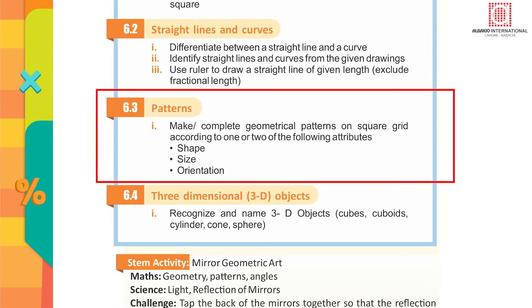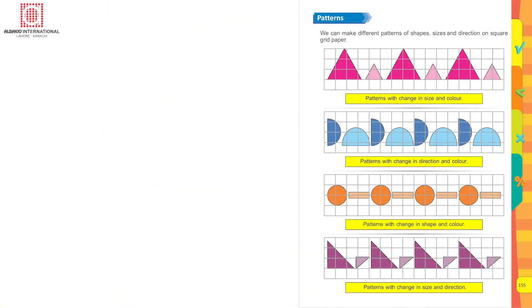Patterns: make or complete geometrical patterns on square grid according to one or two of the following attributes: shape, size, orientation. A pattern is a sequence of repeating objects, shapes, or numbers. A pattern has a rule which tells us which objects belong to the pattern and which do not. Patterns that neither grow nor reduce but only repeat are known as repeating patterns.